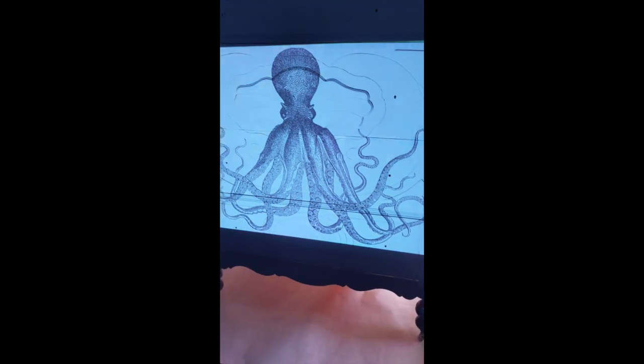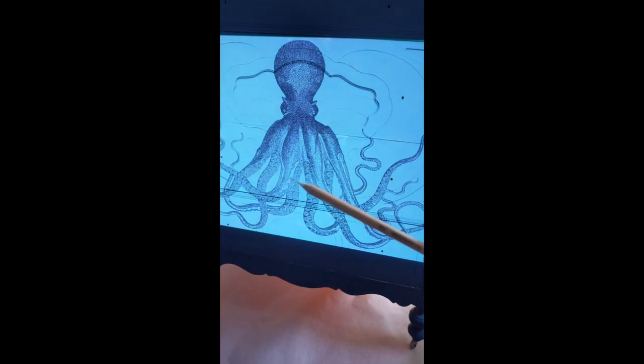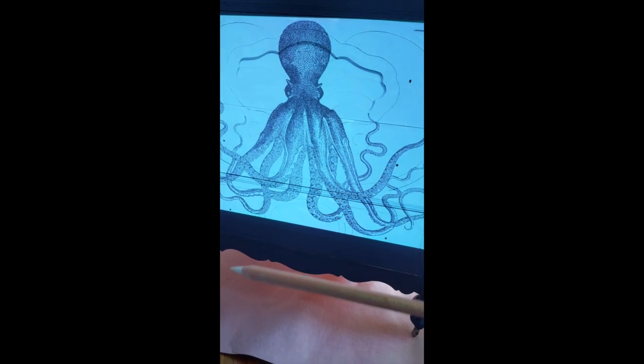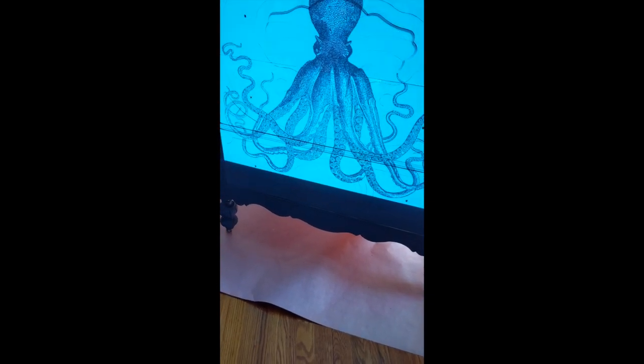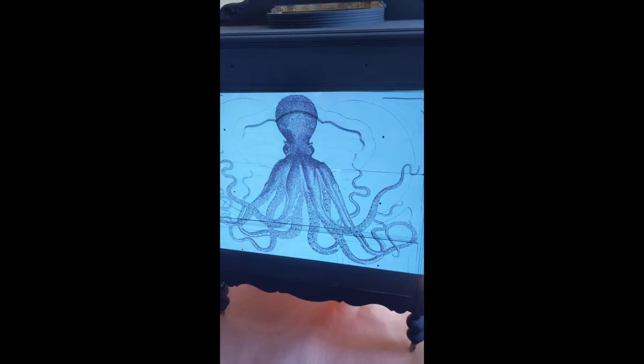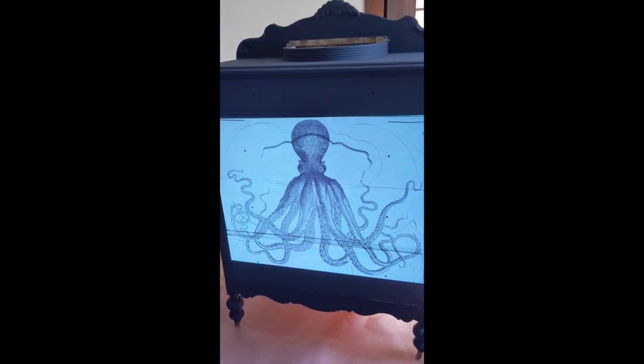There's the setup. I'm going to take this pencil—it's a white chalk pencil, I don't know if you can see the writing on it. I'm going to outline the whole thing and then go back and paint it with white chalk paint. That's the process.